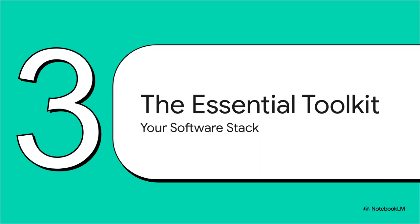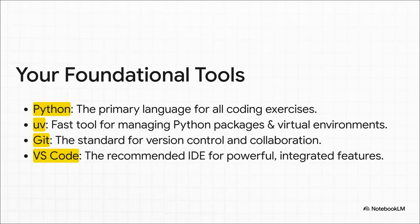Command center chosen. Now let's get the core software installed. Think of these tools as the absolute non-negotiable pillars for all the MLOps work we're going to be doing. Here are the big four: Python, of course — the language of data science. Git — the undisputed king of version control and collaboration. VS Code — your command center. And then there's UV.